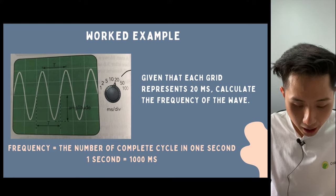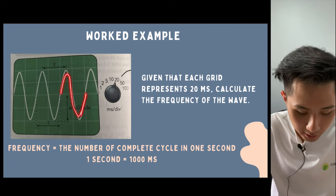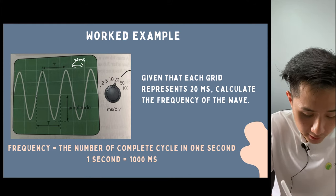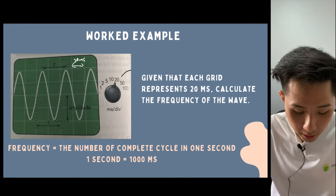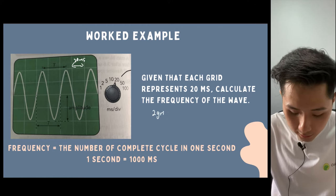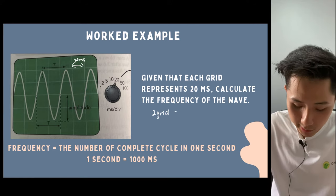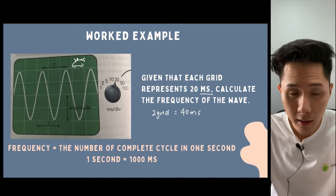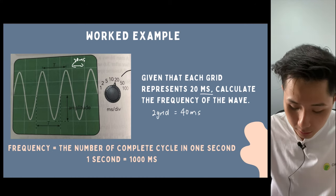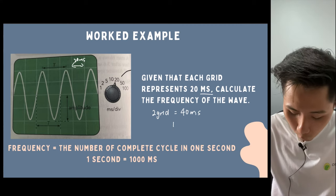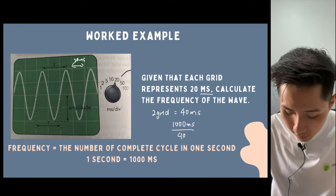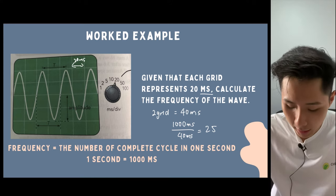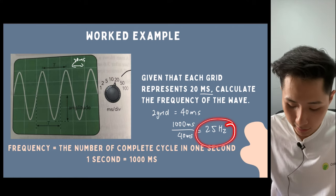How to determine the frequency? First, we need to determine how long does it take to create one cycle. From the information we know that one grid here represents 20 milliseconds. For the picture here, we can see that it takes two grids for one complete wave to pass through. As a result, it's 40 milliseconds, meaning it takes 40 milliseconds for one complete wave to travel. Therefore, to calculate how many complete waves it will travel in one second, I simply use one second, which is 1000 milliseconds, divided by 40, and that will get 25. Meaning in one second it will create 25 complete cycles. As a result, we can say that the sound wave has a frequency of 25 hertz.